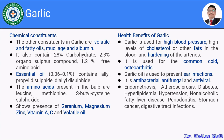Moving towards the uses and health benefits of garlic — mainly comprising alliin, allicin, and sulphur components — it is used for high blood pressure, high cholesterol, and hardening of the arteries. Garlic is used in hypertension, arteriosclerosis, and is also used in the common cold and osteoarthritis. Furthermore, garlic oil is used to prevent ear infections.